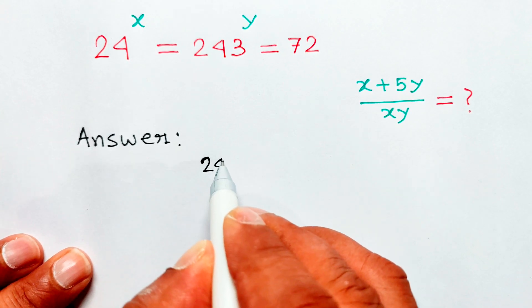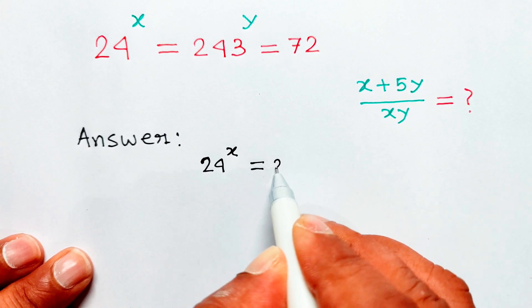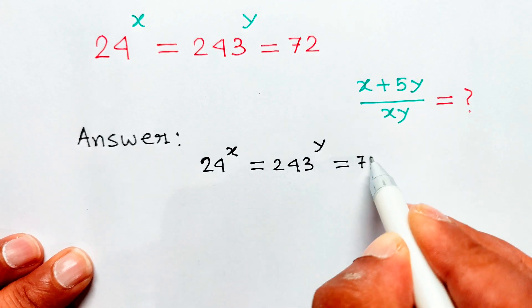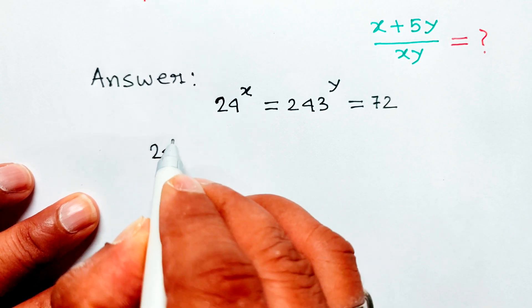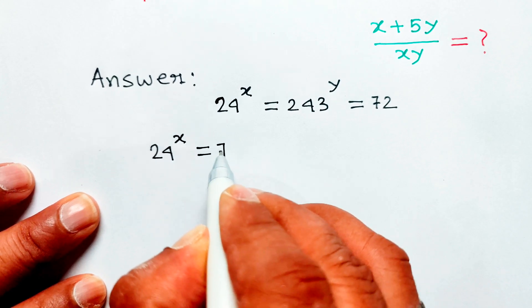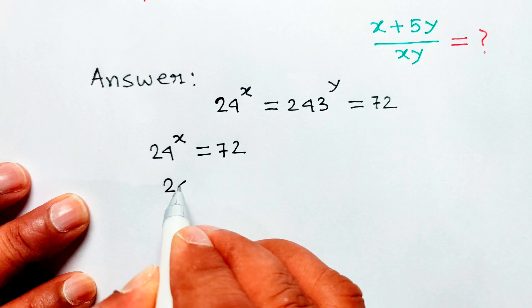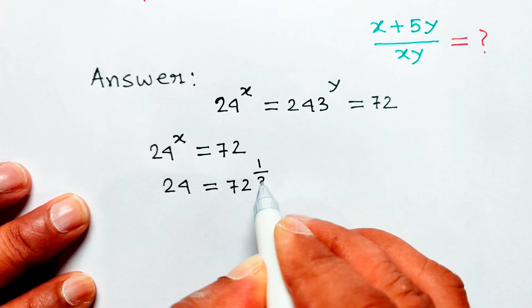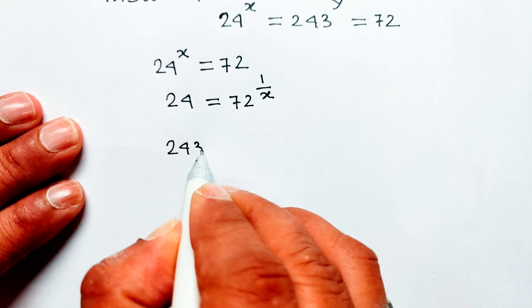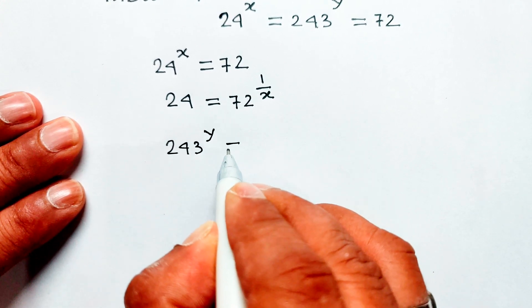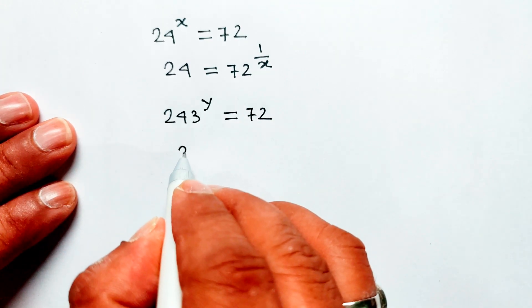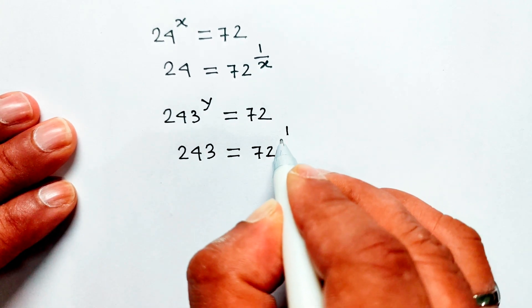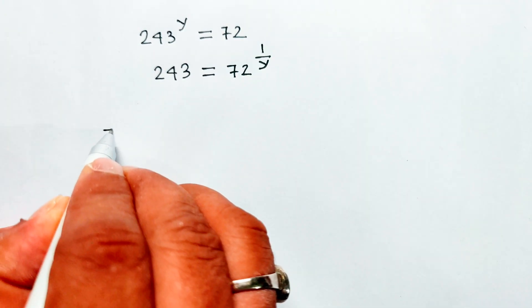24 to the power x equal 243 to the power y equal 72. From 24 to the power x equal 72, then 24 equal 72 to the power 1 divided by x. From 243 to the power y equal 72, then 243 equal 72 to the power 1 divided by y.